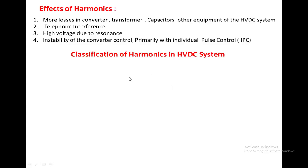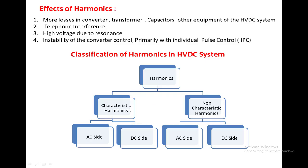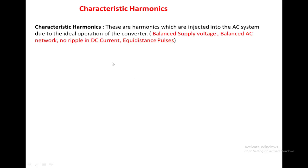Harmonics are broadly classified into two types: characteristic harmonics and non-characteristic harmonics. Characteristic harmonics are present on both the AC side and the DC side, as are non-characteristic harmonics. Characteristic harmonics are defined as harmonics of a specific order present in both the AC and DC systems due to converter operation, assuming ideal conditions — balanced supply voltage, balanced AC network, no ripple in AC current, and equidistant pulses applied to the two converters.